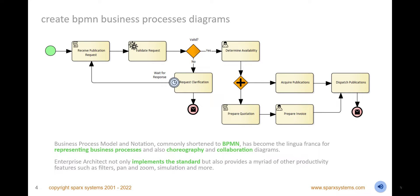Create industry-standard business process diagrams using BPMN, the Business Process Model and Notation standard. You can also create more advanced choreography and collaboration diagrams to model how organizations interact. Use a myriad of diagramming tools to boost productivity, including layout, filtering, legends, pan and zoom, appearance, layers, publishing, and more.